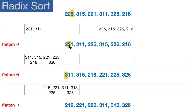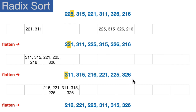Now we repeat this exercise, but using the middle digit. For 221, we look at the two, so it goes into bucket number two. We move 311 into the ones bucket, 225 into the twos bucket because the middle digit is two, 315 into the ones bucket, 326 into the twos bucket, and 216 into the ones bucket. We've sorted them all into the appropriate buckets. Now we flatten that: 311, 315, and 216 from the ones bucket, then 221, 225, and 326 from the twos bucket. We've flattened our list of lists into a single-dimensional list.